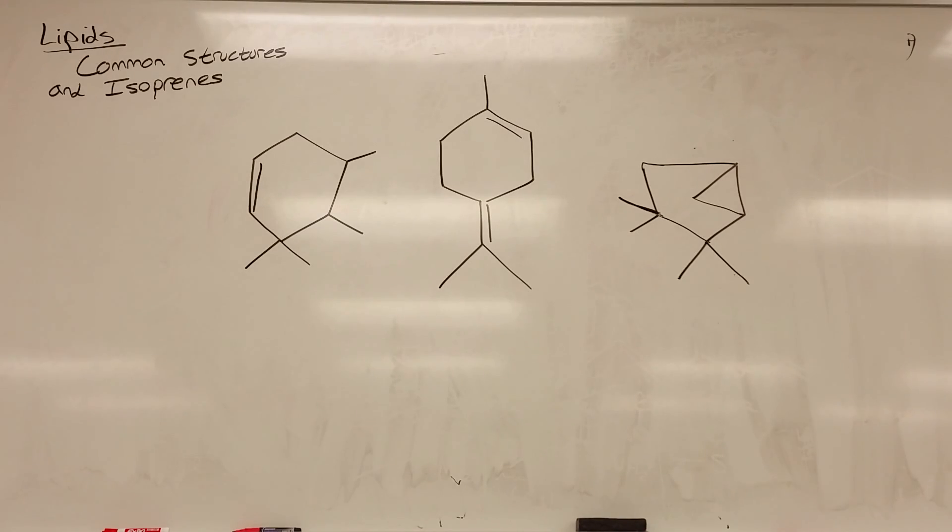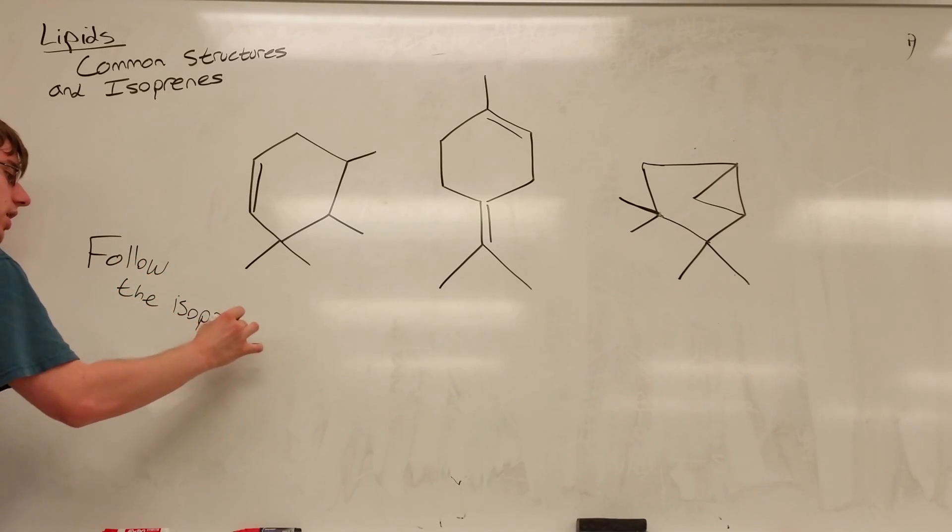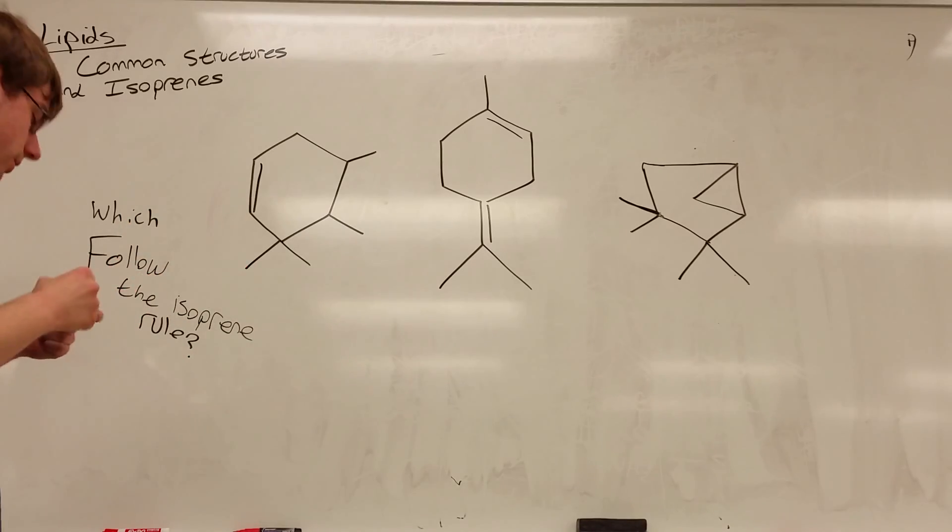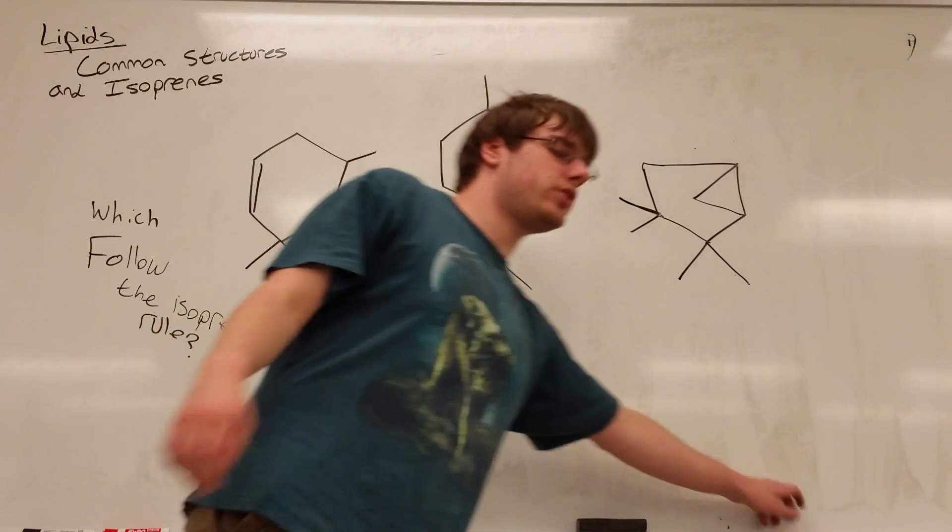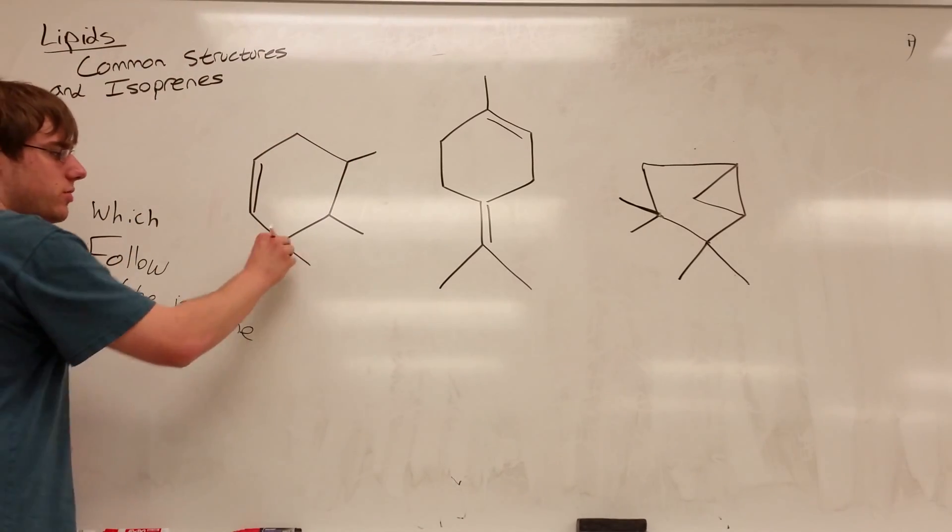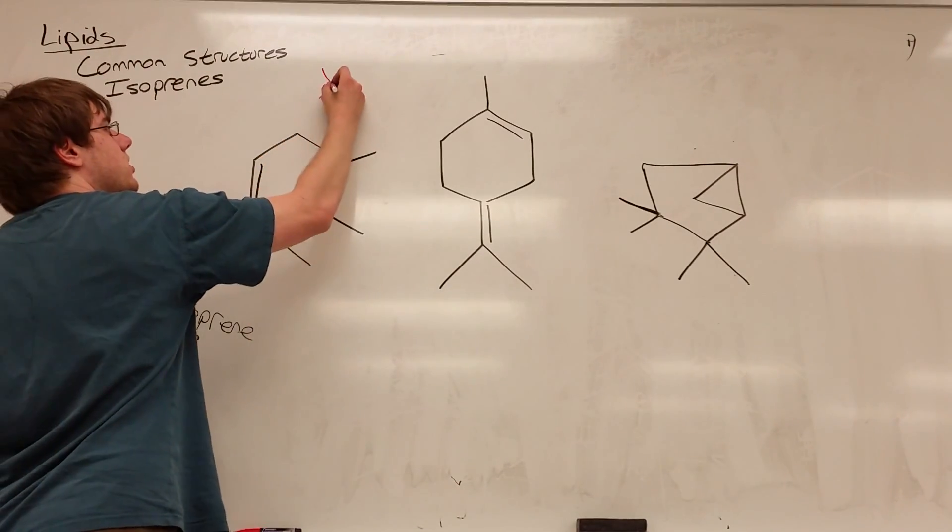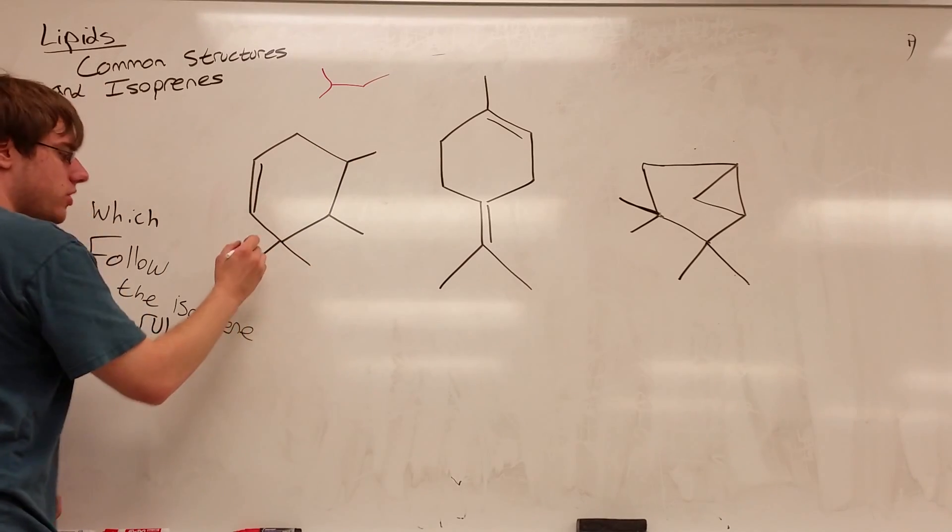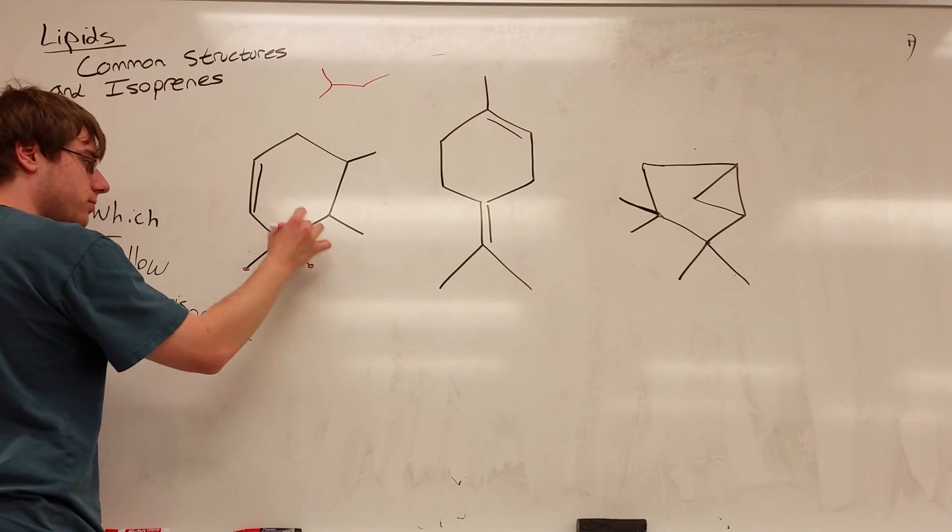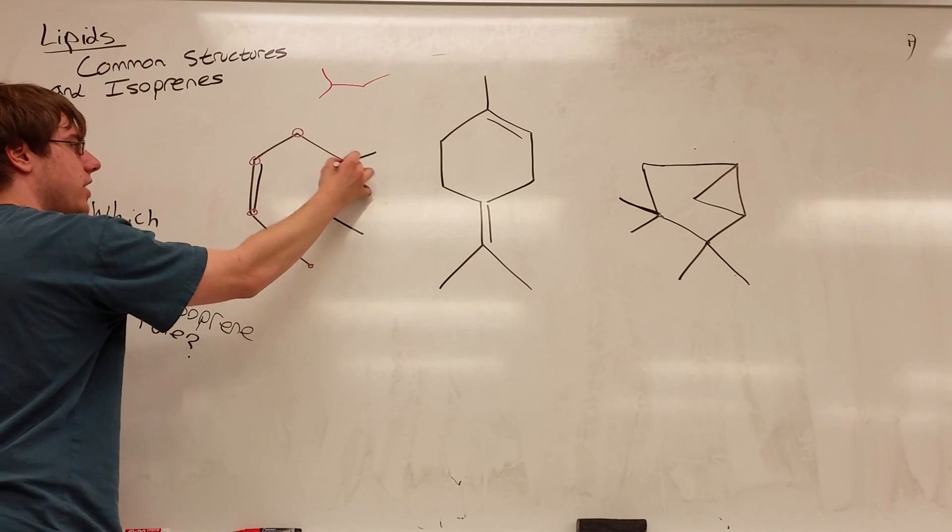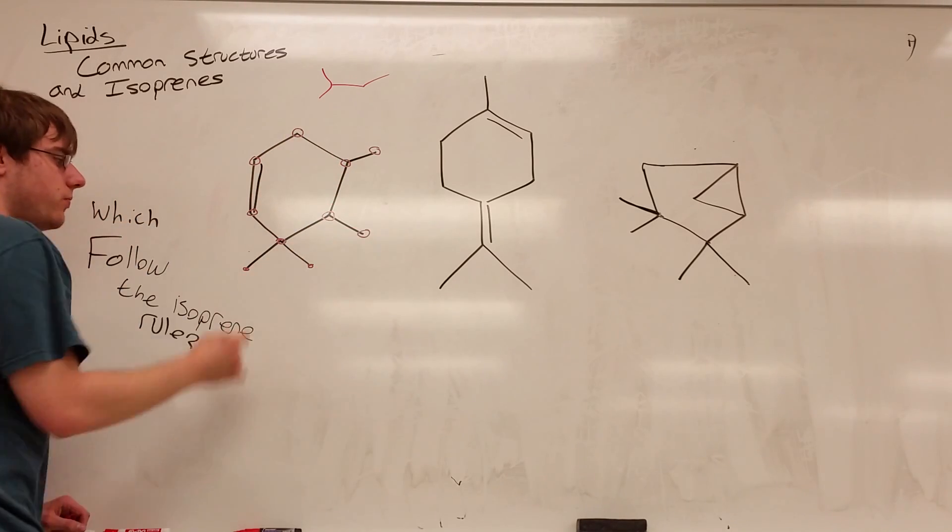So here's an example question you could get: here are three structures and we're asking which of these structures follow the isoprene rule, meaning there is nothing but isoprene building blocks within these structures. Let's start with this structure over here. The best place to start when you're trying to find isoprenes is from the bunny ears, because whenever you see these two methyl sticking out that's usually akin to the bunny ears of the isoprene. So I'm going to start by circling every carbon so I can follow them.